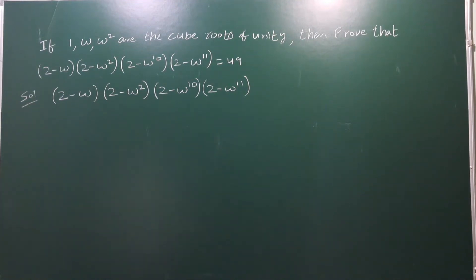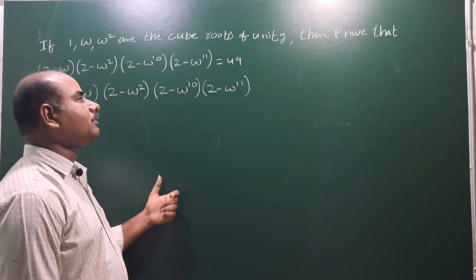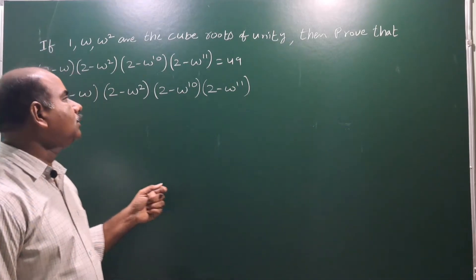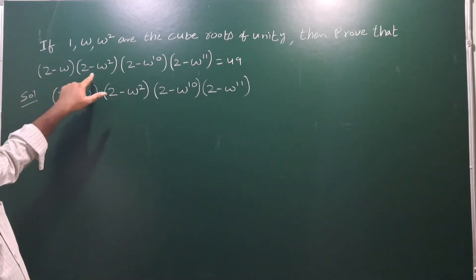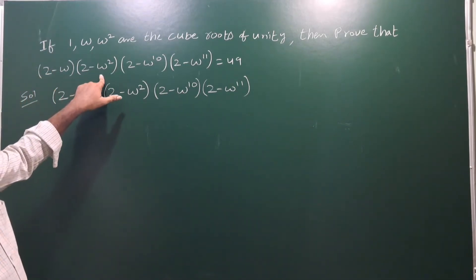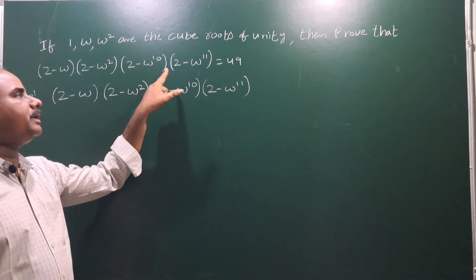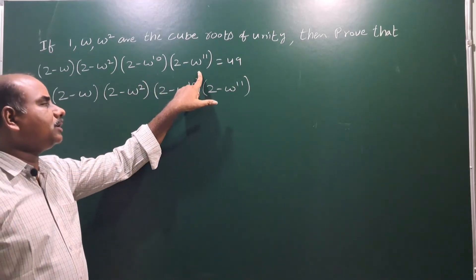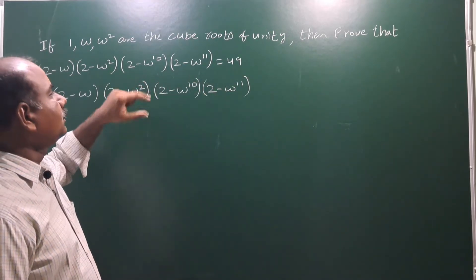If 1, ω, ω² are the cube roots of unity, then prove that (2 - ω)(2 - ω²)(2 - ω¹⁰)(2 - ω¹¹) is equal to 49.